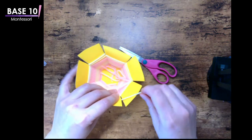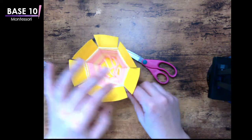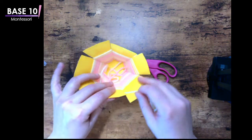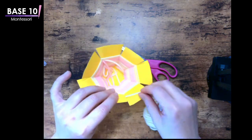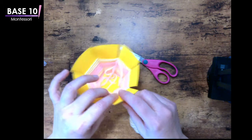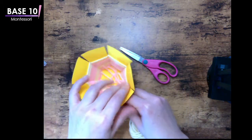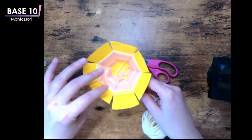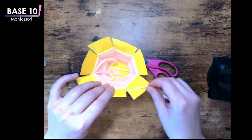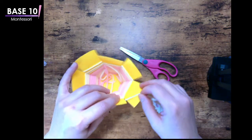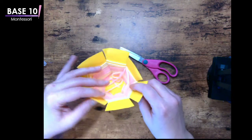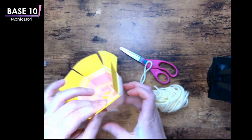We don't want to just focus on the math and the language and the science, but we want to focus on the behavior and focus on developing those virtues and characteristics. And a lot of that starts with the practical life area, both in toddlers and in the primary environment.